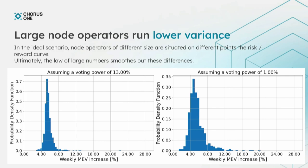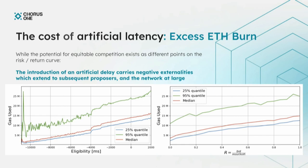One thing we argue in the paper is that this theoretical assumption is not reflected in practice. The reason is that timing games impose several negative externalities which disproportionately hit small validators. Let's talk about the three big categories of negative externalities.